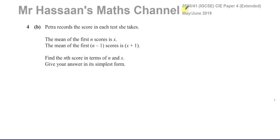So it says: Petra records the score in each test that she takes. The mean of the first n scores is x. The mean of the first n-1 scores is x plus 1. Find the nth score in terms of n and x. Give your answer in its simplest form.